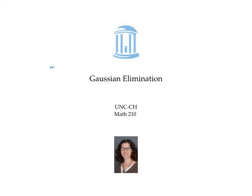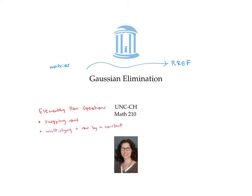In this video, we'll practice converting matrices to reduced row echelon form using elementary row operations. Recall that elementary row operations consist of the following three things: swapping rows, multiplying a row by a constant, and adding a multiple of a row to another row.